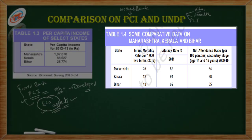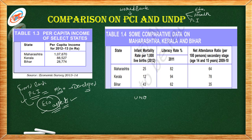Now we come to table number 1.4. Here, three states are compared on infant mortality rate, literacy rate, and net attendance ratio. In Maharashtra, the infant mortality rate is 25, whereas in Kerala it is lower and Bihar it is 43. So by UNDP criteria, Kerala is better as compared to Maharashtra.